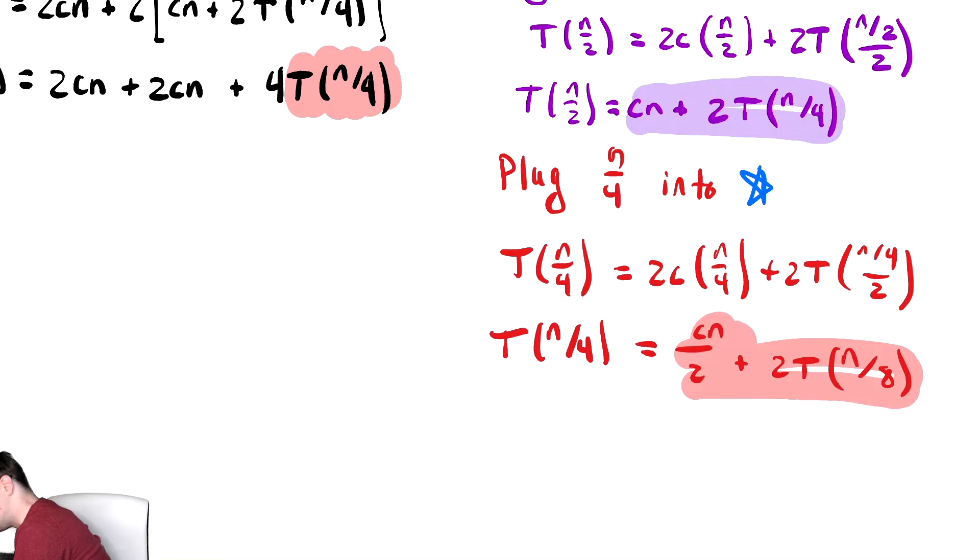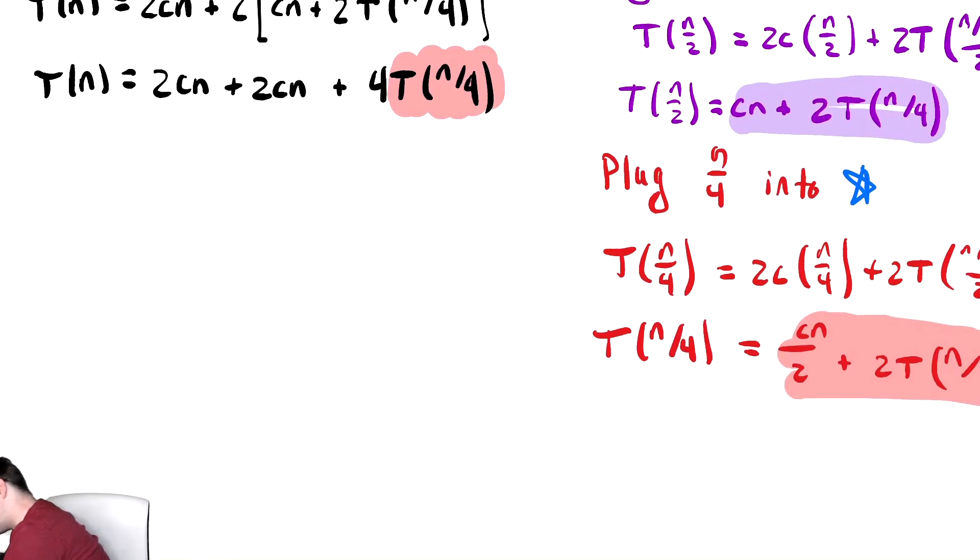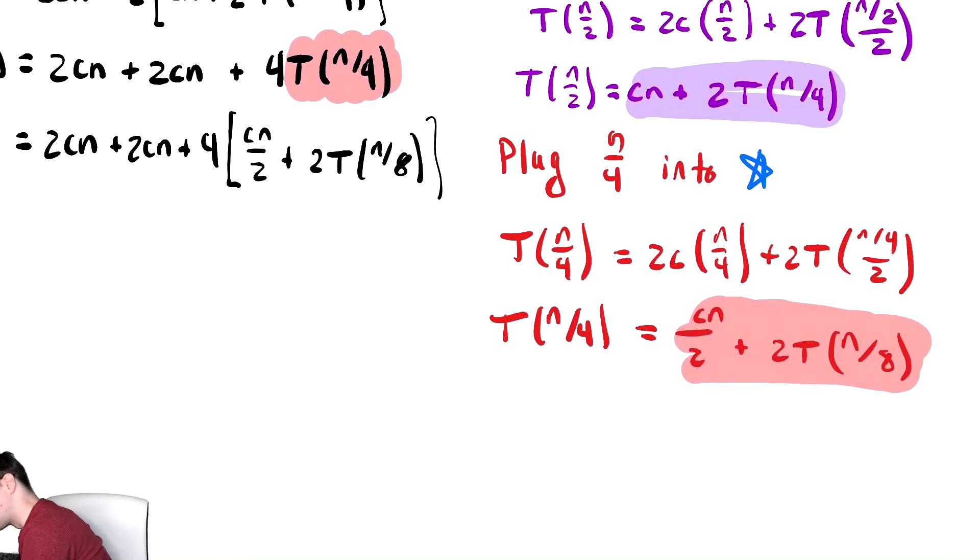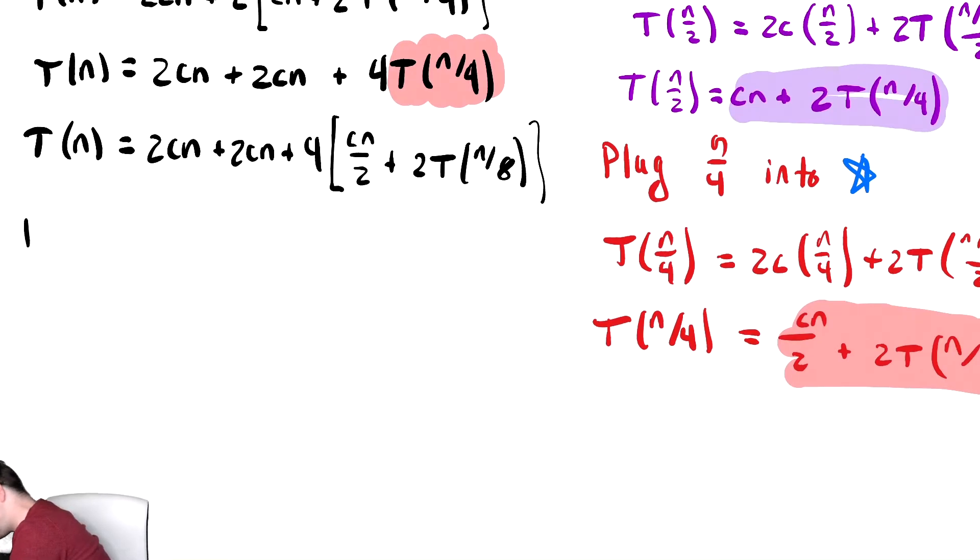Making that replacement, we get T of n equals 2cn plus 2cn plus 4 times the quantity cn over 2 plus 2T of n over 8, copying from the stuff I highlighted in red. Distributing the 4, we get T of n equals 2cn plus 2cn plus 2cn, since 4 times cn over 2 simplifies. That's convenient. Plus 8T of n over 8, since 4 times 2 is 8.